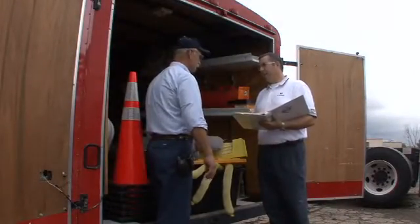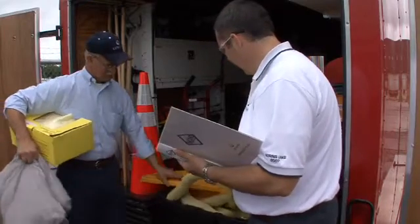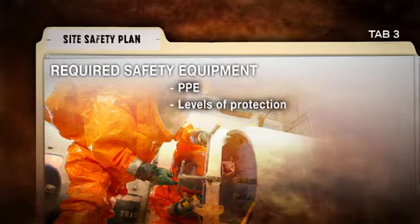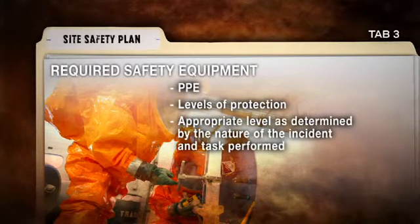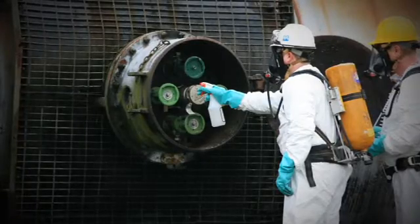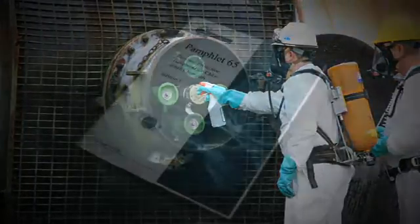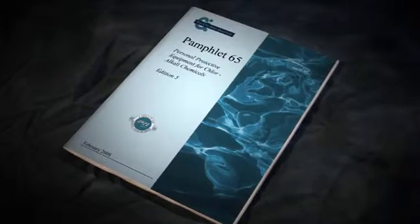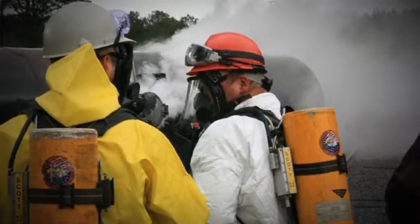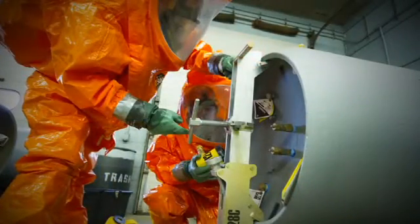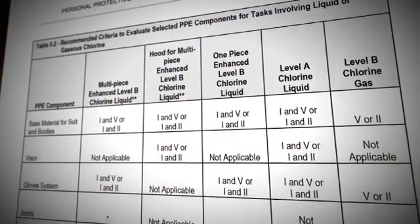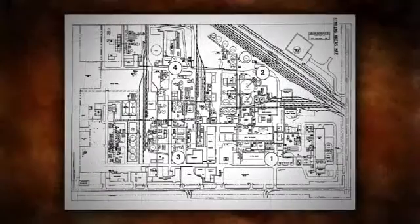The plan will identify and explain the required safety equipment necessary and available for the response, including personal protective equipment or PPE. The plan illustrates the different levels of protection and how the appropriate level is determined by the nature of the incident and the task performed. Based on published literature such as the Chlorine Institute Pamphlet 65, Personal Protective Equipment for Chloralkali Chemicals, the determination for the initial level of PPE required can be made. An established PPE matrix can expedite the PPE selection process during an incident.